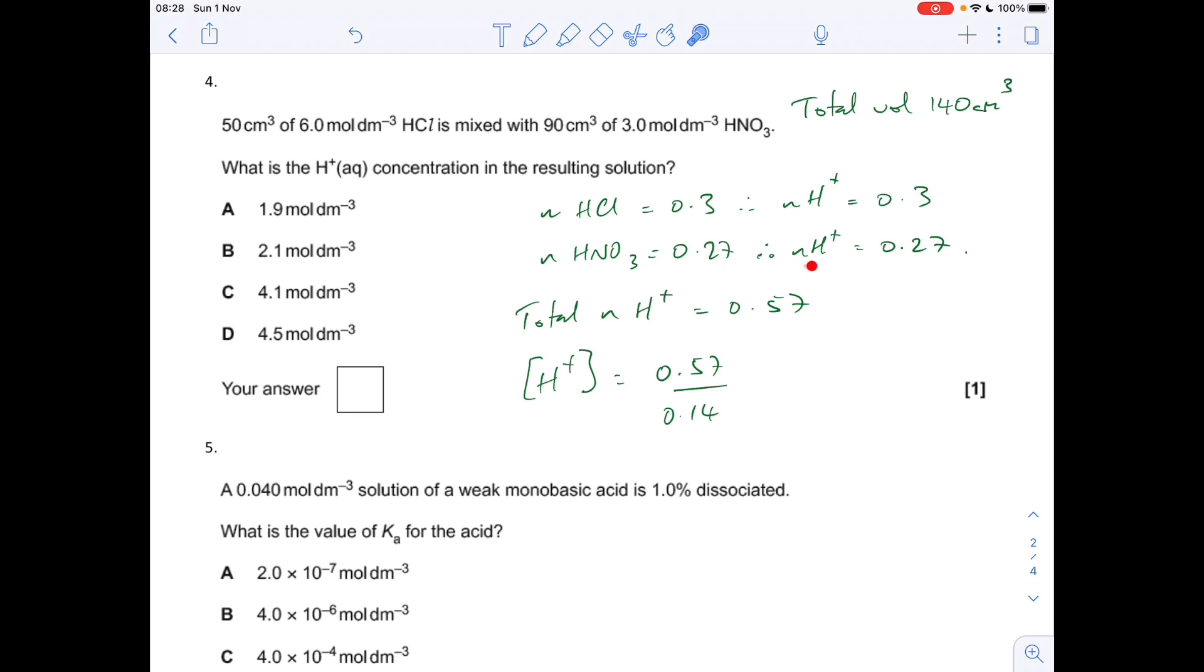I've done the same for the nitric acid, also monoprotic, so 0.27 moles of H+ from the nitric acid. The total moles of H+ is the sum of those two, so 0.57. The concentration of H+ is moles over the volume, so there's that 140 cm³ coming into play. If you do that, you get the H+ concentration at 4.0714 and so on, and the answer was C.